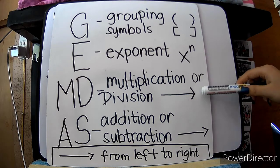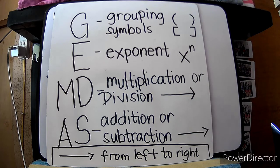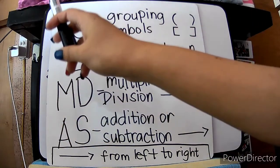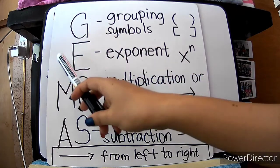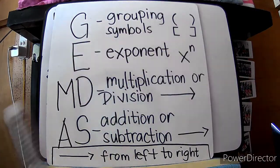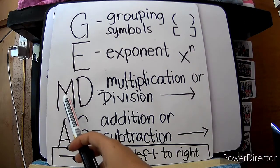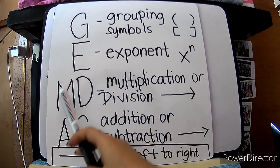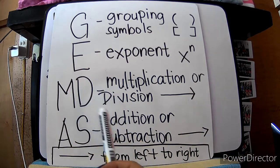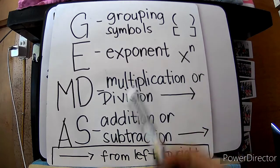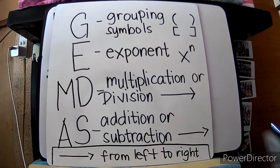Pero, bago nyo magawa yung addition or subtraction, dapat ma-eliminate muna natin yung multiplication or division. It's just like a step — dapat munang mawala si grouping symbol bago natin gawin yung exponent along the operation from left to right. Then, kailangan magawa muna natin yung exponent bago multiplication or division as they appear from left to right. And also, bago natin gawin yung addition and subtraction, dapat wala ng multiplication or division from left to right.